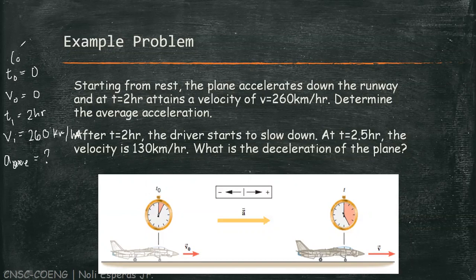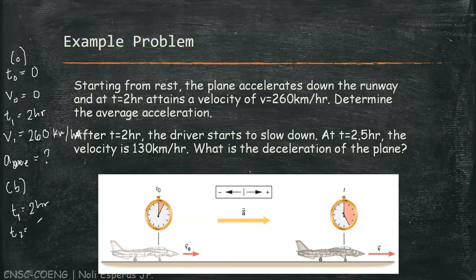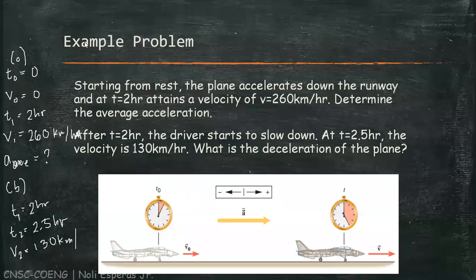This is letter A. And for letter B, after T equals 2 hours, the driver starts to slow down. So, we have T1 equals 2 hours. The velocity at T equals 2.5 hours — we have T2 equals 2.5 hours — and the velocity is 130 kilometers per hour.